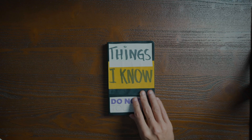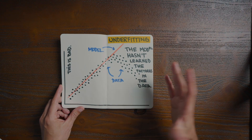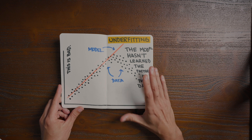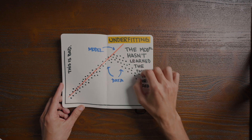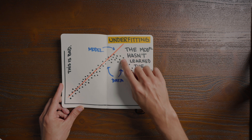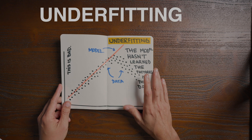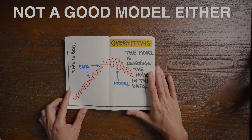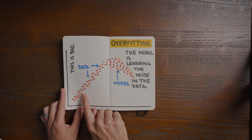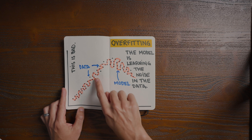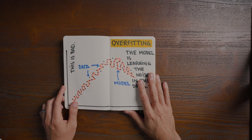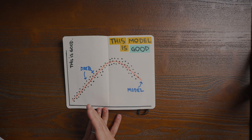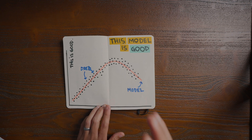But how? First, let's get on the same page. Here is a dataset and a model that I built. This model is not good — it hasn't learned the patterns in my data. Notice this shape here and how the model misses it completely. We say that this model is underfitting. Here is another model. It's not a good model either. Notice how this time the model has learned all of the noise in the dataset. We say that this model is overfitting. Finally, this is a good model — doesn't underfit, doesn't overfit. This is what we want.